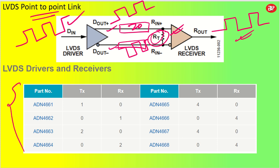Since I have taken it from the Analog Devices application note, there are a lot of part numbers given for transmitters and receivers. Transmitter is nothing but your driver and receiver is your RX. If you want to utilize ADN4661, you can go ahead — there is only one driver. If you utilize ADN4662, you can go for one receiver. Similar to that, other parts are there which you can go through.